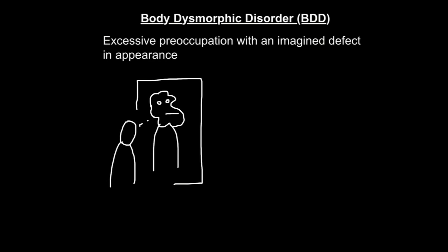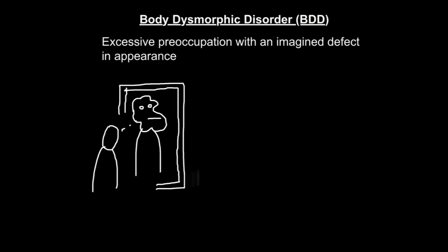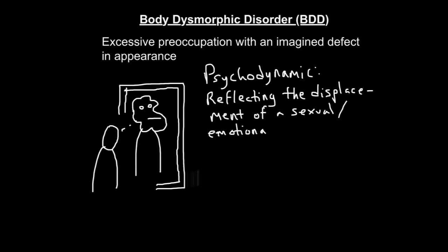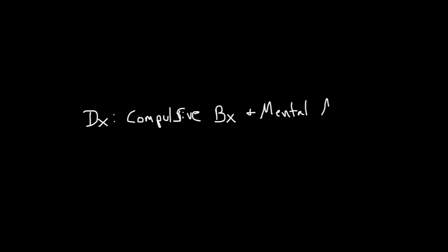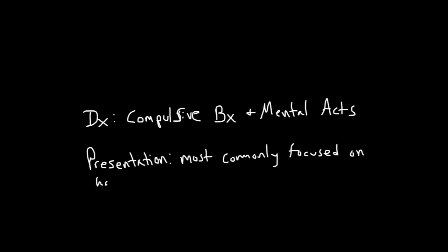Body dysmorphic disorder is an excessive preoccupation with an imagined defect in appearance that causes significant distress or impairment in social, occupational, or other important areas of functioning. In the psychoanalytic perspective, this is seen as reflecting the displacement of a sexual or emotional conflict onto a non-related body part. Biologically, this condition may possibly be related to serotonin because of patient responsiveness to SSRIs. In diagnosing this disorder, you'll often find compulsive behaviors such as excessive mirror checks and excessive grooming, and mental acts such as comparing their appearance to that of others. The most commonly focused areas include the hair, nose, skin, eyes, head, face, and overall body build.